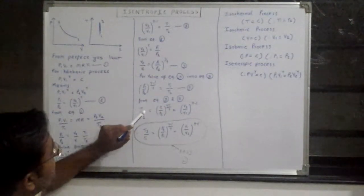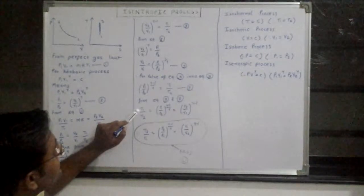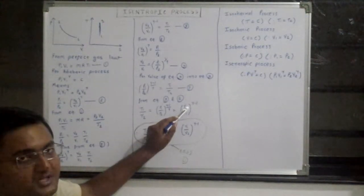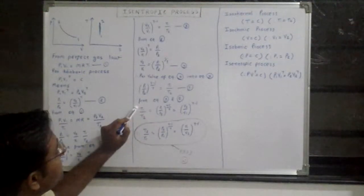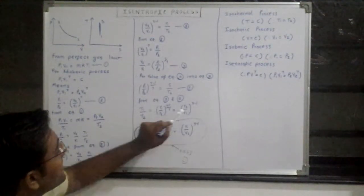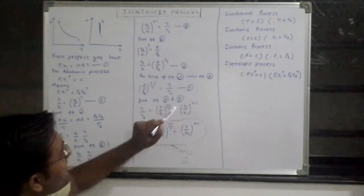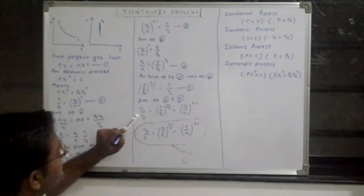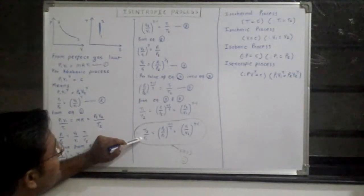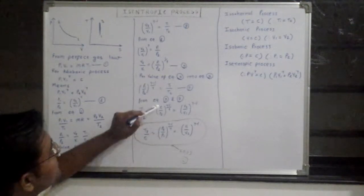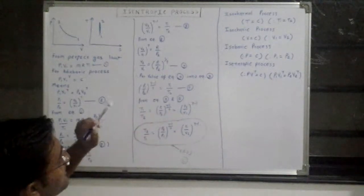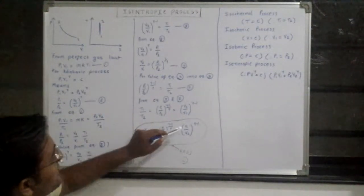Note that when T1 temperature is in the numerator, V2 volume is also in the numerator — they are inversely proportional. But when T1 is here, P1 is also here, and there is a difference: the exponent for pressure is (gamma minus 1) upon gamma, while for volume it is (gamma minus 1). Reversing it: T2 by T1 equals P2 by P1 raised to (gamma minus 1) upon gamma, and V1 by V2 raised to gamma minus 1.